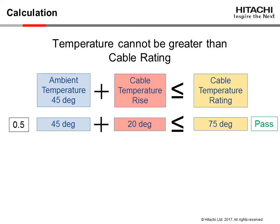Here are two examples of a cable with a maximum operating temperature of 75 degrees. 0.5 amps are applied to each conductor, resulting in a temperature rise of 20 degrees C. Adding the ambient temperature of 45 degrees plus the 20 degrees equals 65 degrees, which is below the 75 degree maximum operating temperature. This is a pass.